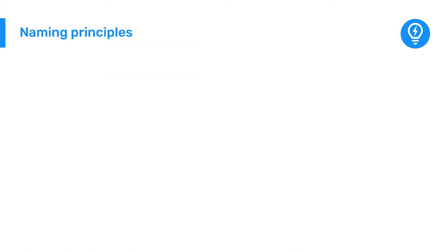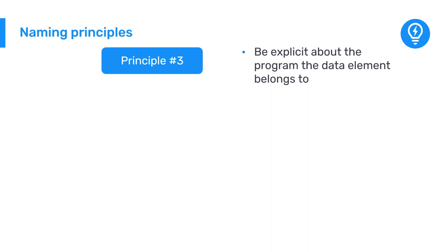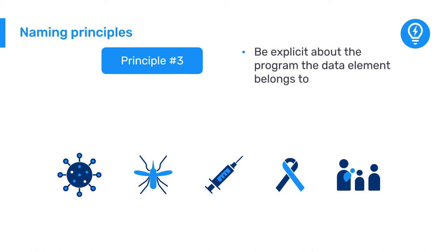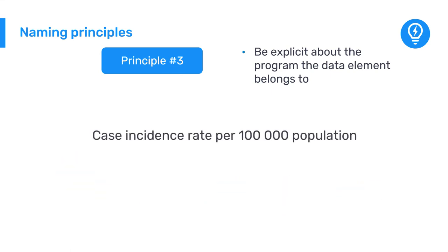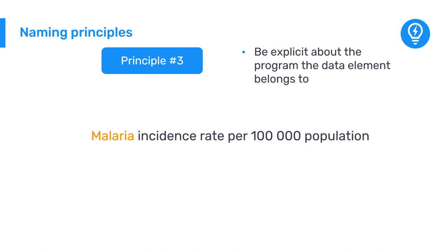The third principle is to be explicit about the program that the data element belongs to if it could belong to more than one. Because DHIS2 is an integrated system with information from many different types of data, it is necessary to be explicit about the area or program for each data element or indicator. For example, the indicator 'case incidence rate per 100,000 population' is unclear because it could refer to malaria, TB, cholera, or other programs. We should put the specific health program at the start of the indicator name to make it clear which one it refers to.